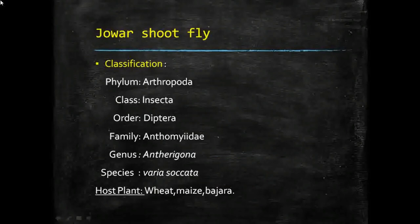Jowar shoot fly is classified as phylum Arthropoda, class Insecta, order Diptera, family Anthomidae, and the genus and species name is Atherigona varia socata.